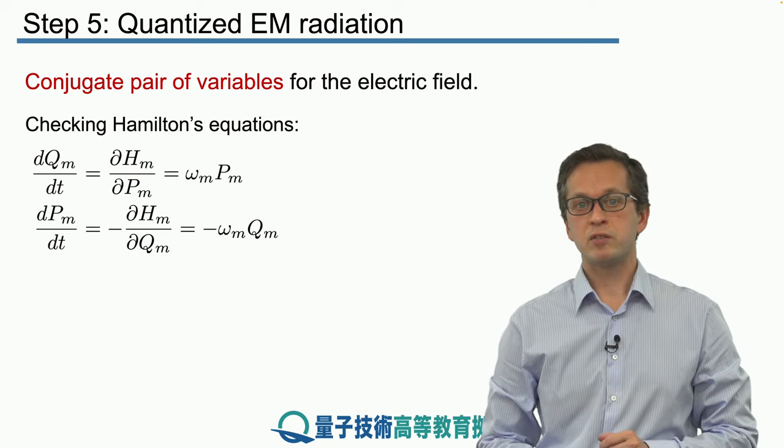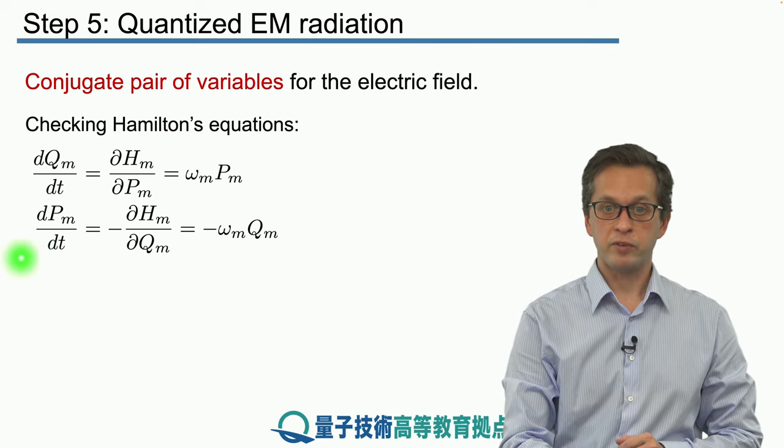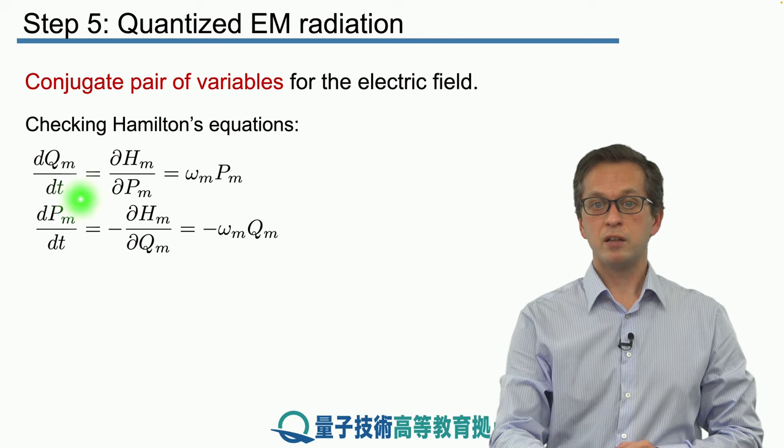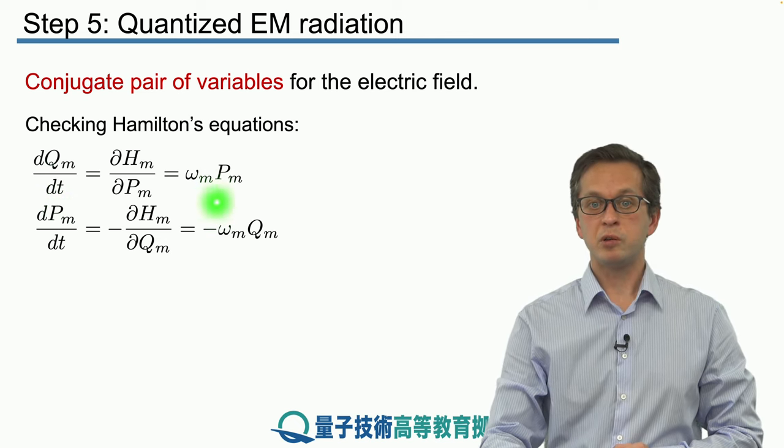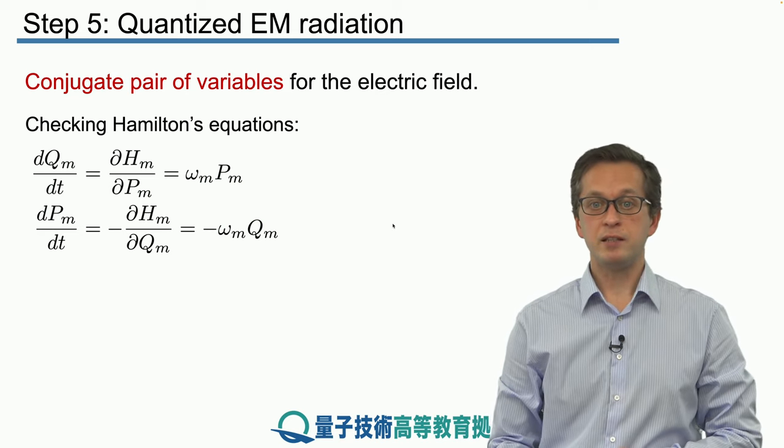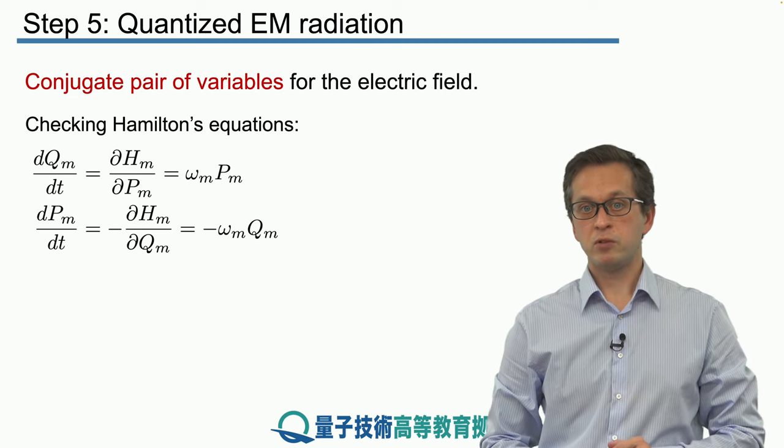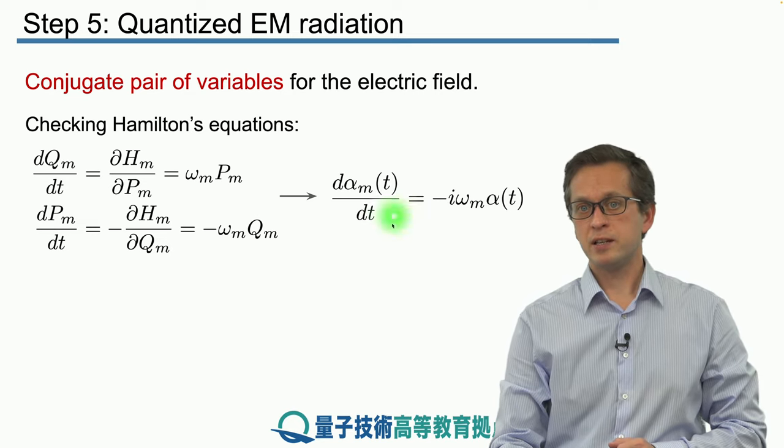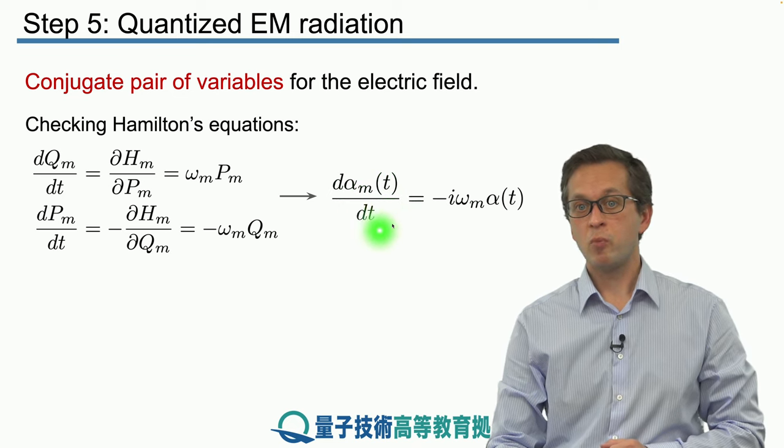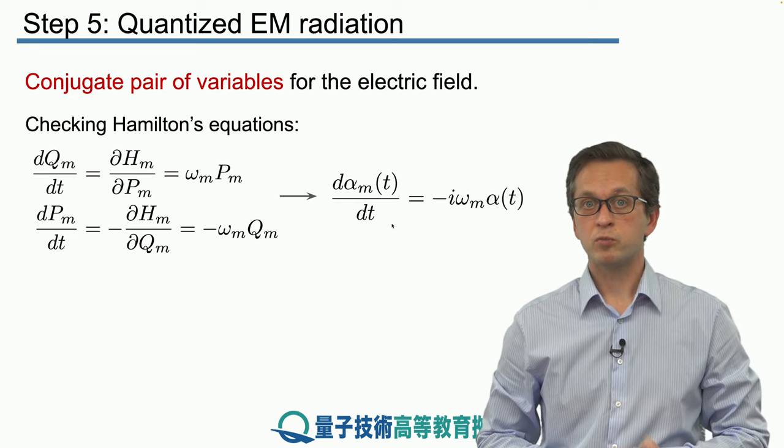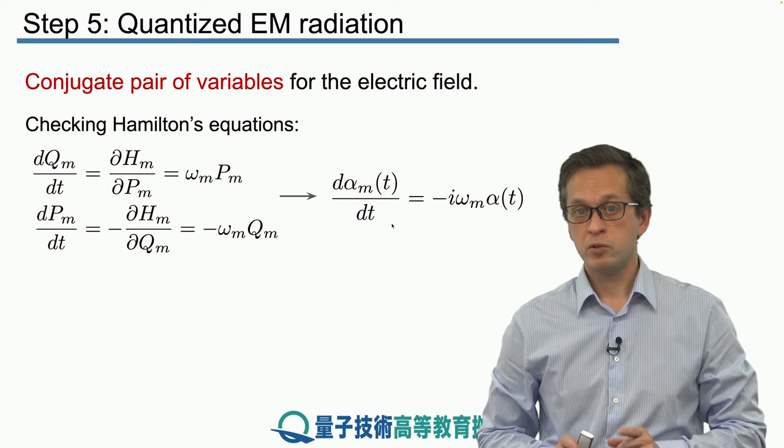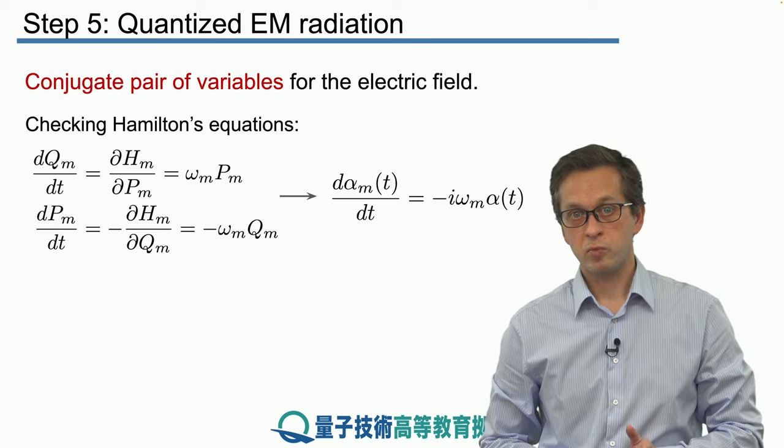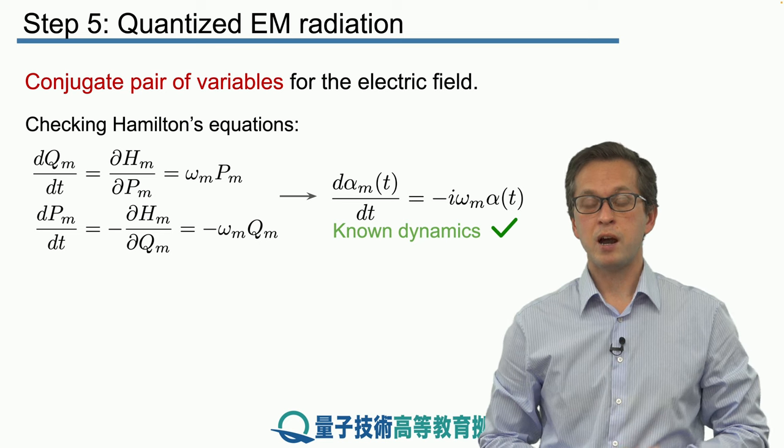Let's check the dynamics for the real and imaginary parts of alpha: Q_m and P_m. Taking the time derivative and applying Hamilton's equations: dQ/dt = ω_m P and dP/dt = -ω_m Q. You can recognize these as simple harmonic oscillator equations. Combining them, the complex field amplitude α_m obeys dα_m/dt = -iω_m α_m, which agrees with what we said earlier. Using Q and P as our canonically conjugate pair and checking their dynamical equations, we recover known dynamics. In other words, Q and P are canonically conjugate.